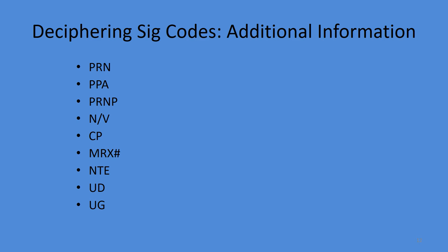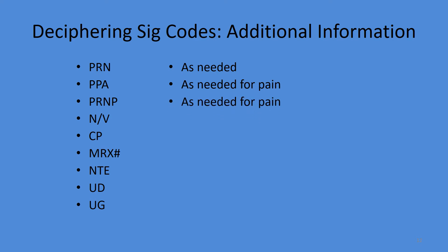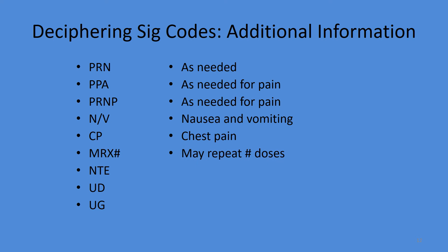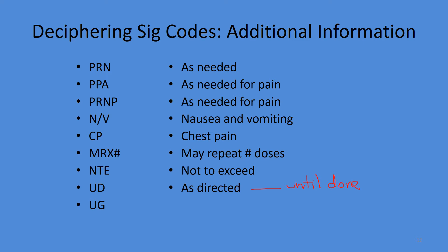Now let's cover additional information codes. PRN means as needed. PPA and PRNP both mean as needed for pain — PRNP is the traditional one, but depending on your area, doctors and pharmacists may create their own. N/V is nausea and vomiting. CP is chest pain. MRx means 'may repeat,' and the x indicates the number of doses. NTE means not to exceed. UD means as directed — commonly mistaken for 'until done.' UG means until gone.